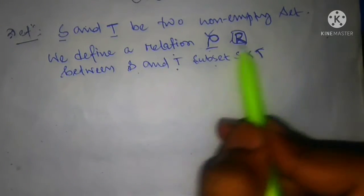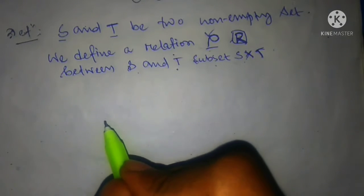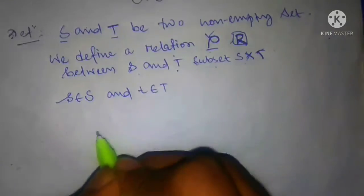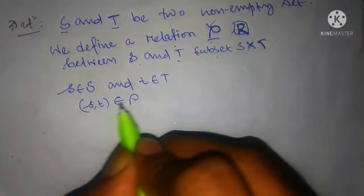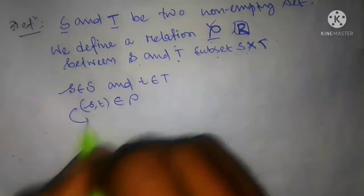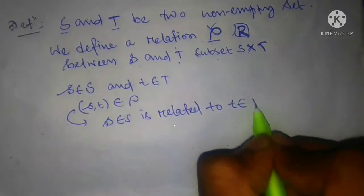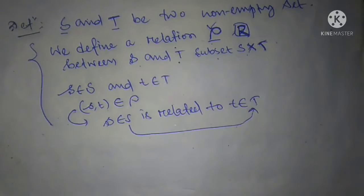Let small s belong to capital S and small t belong to capital T. The relation is the ordered pair (s, t) belonging to Rho. Then the element s in S is said to be related to t in T. So S and T are two non-empty sets, and a relation from S to T is defined by ordered pairs of their Cartesian product.